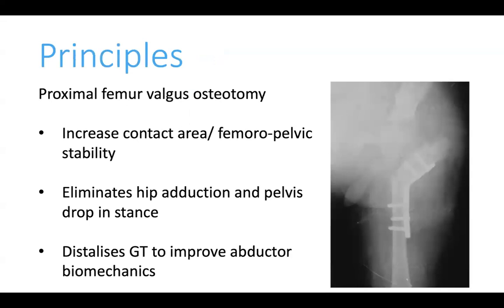The pelvic support osteotomy is a proximal femoral valgus osteotomy. It increases the contact surface area between the proximal femur and the pelvis, thereby increasing stability. The proximal fragment is fixed in maximum adduction, so in the stance phase there is no further adduction and pelvic drop. This eliminates the Trendelenburg lurch in the stance phase and also distalizes the greater trochanter to improve the abductor lever arm mechanism.